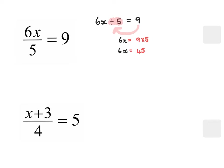If 6x equals 45, it means that 45 divided by 6 will give me my final answer. 6 goes into 45 seven times because it goes into 42, and I have a remainder of 3, which means that my answer is 7 and a half.